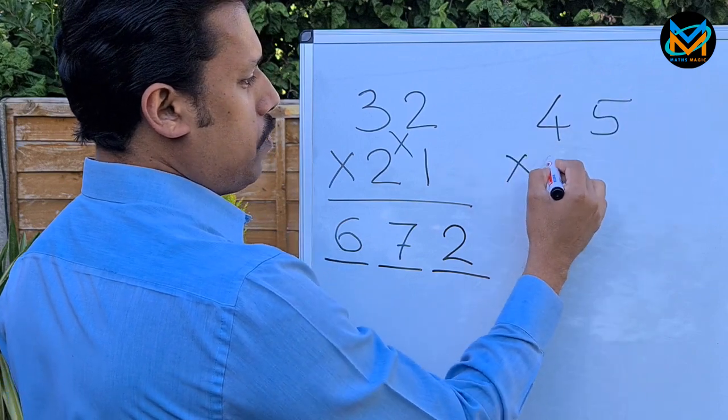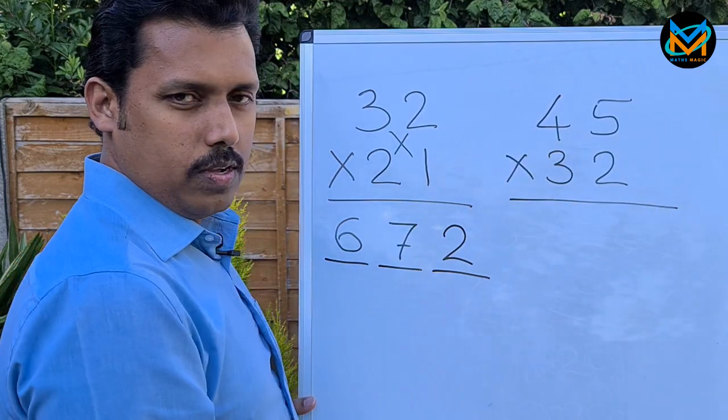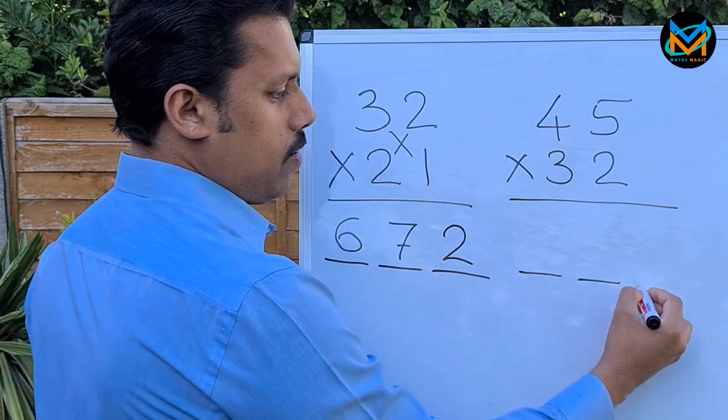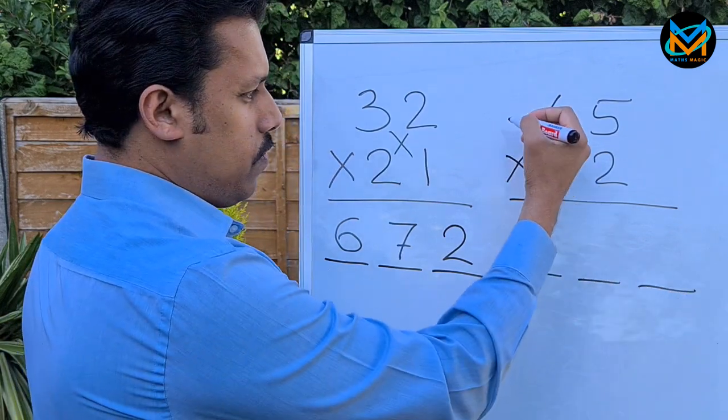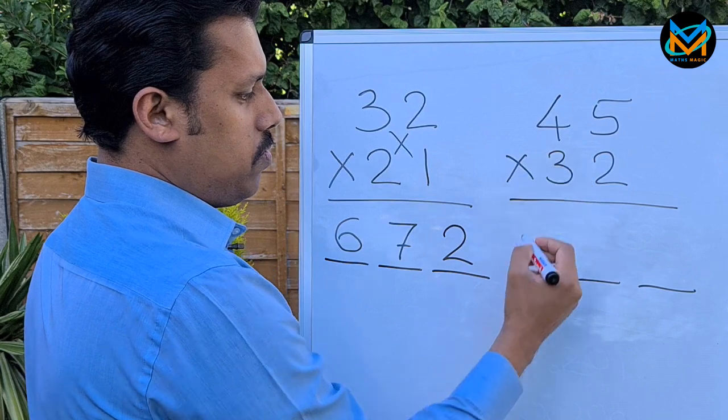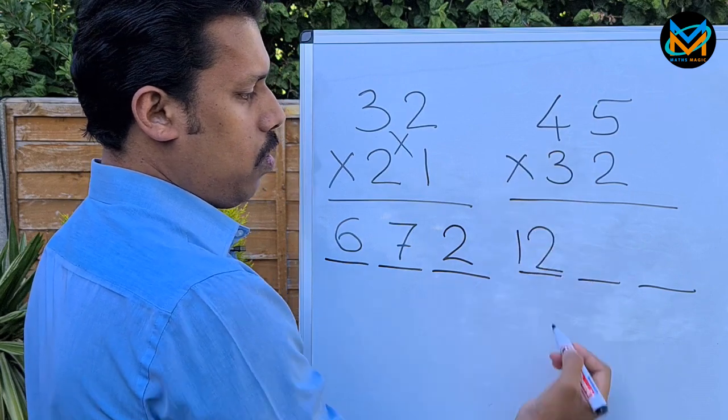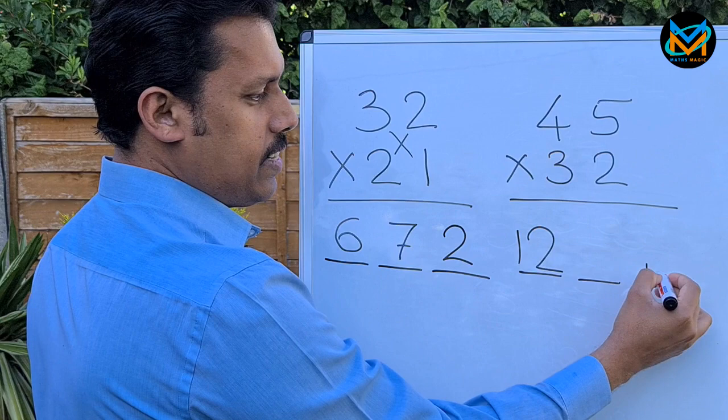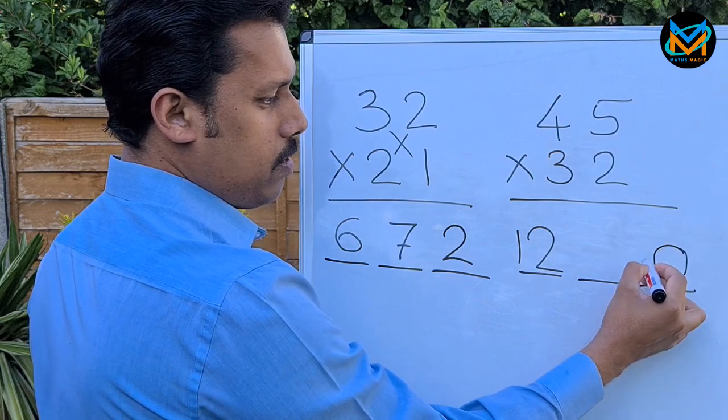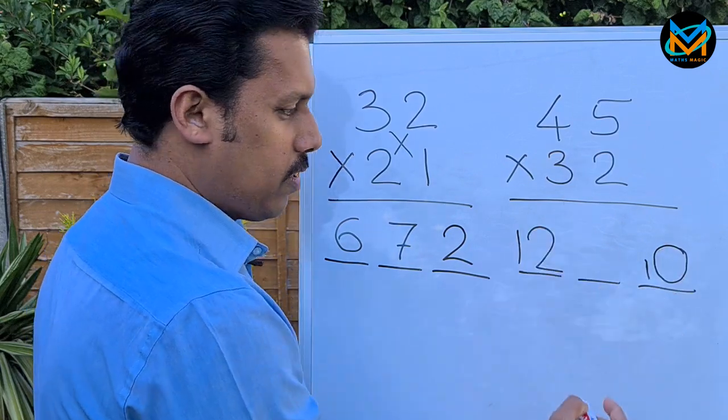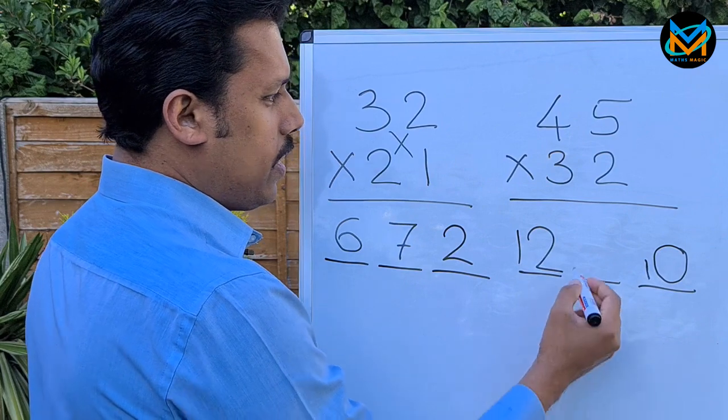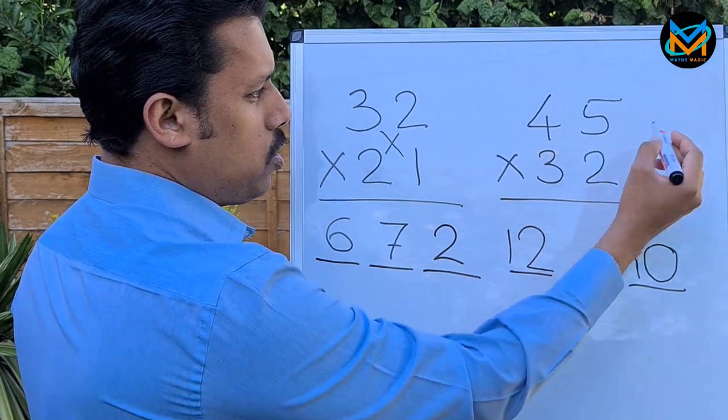45 times 32. Again, three digits. First digit is 4 times 3, which is 12. Last digit: 5 times 2, which is 10. If it's a two-digit number, bring it to this side. The middle number: 4 into 2 is 8, 5 into 3 is 15.